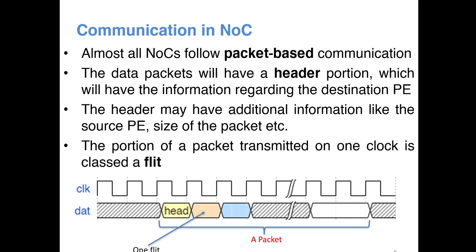Now almost all NoCs follow packet based communication. That means you are sending data as data packets. Every packet will have a header portion which will have the information about the destination PE. When you are sending a packet from one PE to another PE, the packet will definitely have information about the destination. It may have other information also in the header such as the address of the source PE, the total size of the packet, how many bytes in the packet, etc.